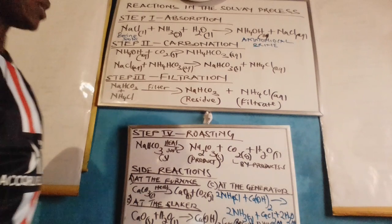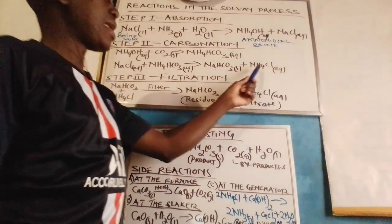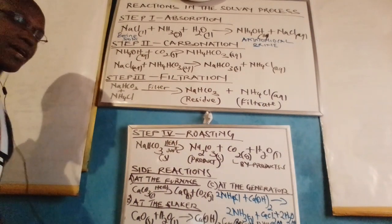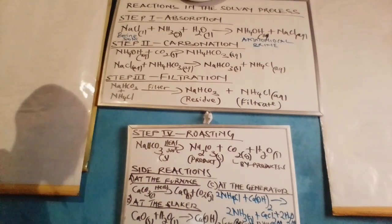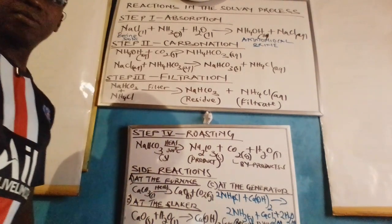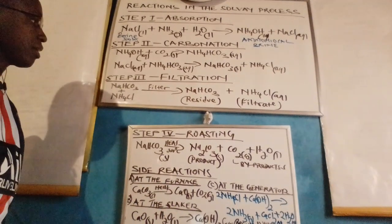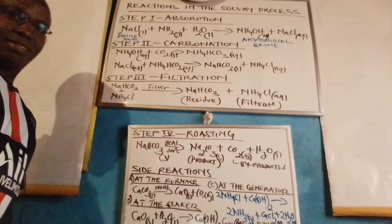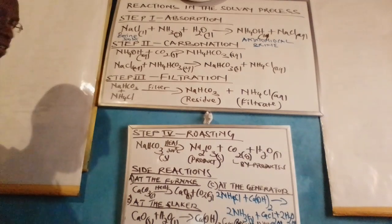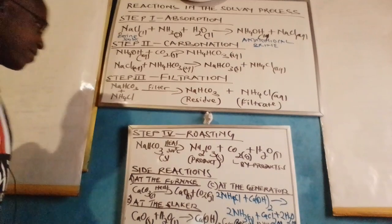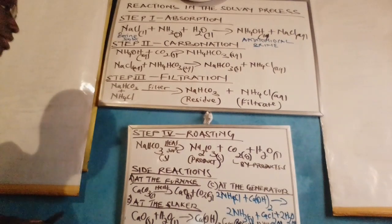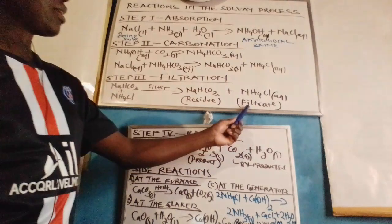In this process, two products have been produced: solid sodium hydrogen carbonate and aqueous ammonium chloride. We need to separate the two, and that is why we have the filtration chamber. At the filter chamber, we use a semi-permeable material — mainly flannel cloth — which has pores that allow the passage of solution but not solids. The sodium hydrogen carbonate is obtained as a residue, while the ammonium chloride, which is in liquid form, passes through the flannel surface forming the filtrate.